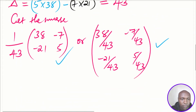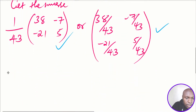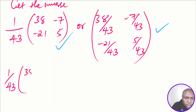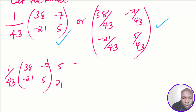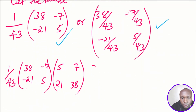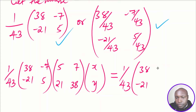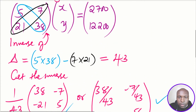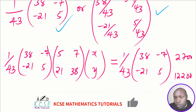After getting the inverse, we multiply both sides of the matrix equation by the inverse. On the left side, (1/43)[38, -7; -21, 5] multiplied by [5, 7; 21, 38] gives the identity matrix, which has no impact — just like multiplying by one — leaving us with [X, Y]. On the right side, we pre-multiply [2700; 12200] by the same inverse.